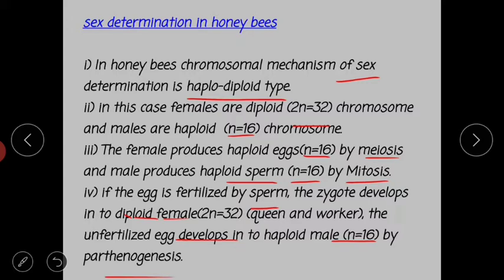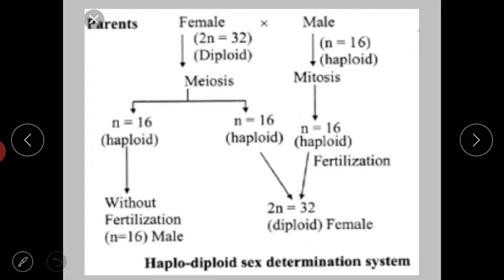The unfertilized eggs develop into haploid males (n = 16) by the process of parthenogenesis. Parthenogenesis means the development of a new individual without the process of fertilization. In this condition, the unfertilized egg directly develops to form a haploid male or drone having n equal to 16 chromosomes. So males are produced by parthenogenesis.